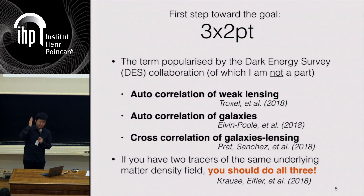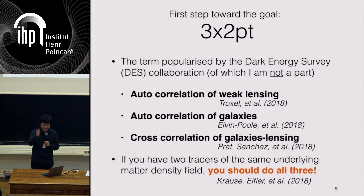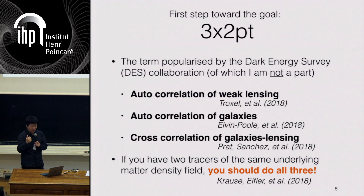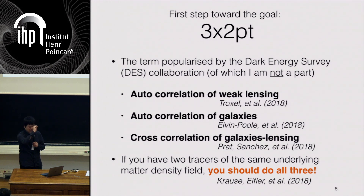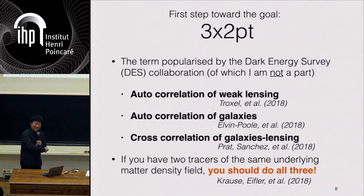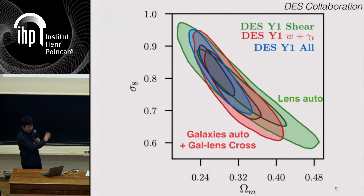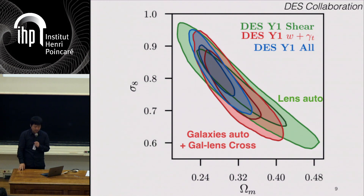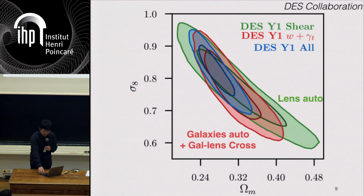This terminology was popularized by the Dark Energy Survey, which I very much like. I'm not part of the survey team, so I think I can say that without it being political. You have auto-correlation of weak lensing, auto-correlation of galaxies, and cross-correlation of galaxy lensing. These are all papers from the Dark Energy Survey first-year results. Each measurement has to come with a person in charge of it — that shows you how hard it is to actually do this, but you should do it. That's the key message from the DES collaboration. When you have lensing auto you get green, galaxy auto and galaxy-lens cross you get red, and combining them all gives blue. For many years we just had galaxy auto combined with lensing auto without the cross between them — this is the major step forward.